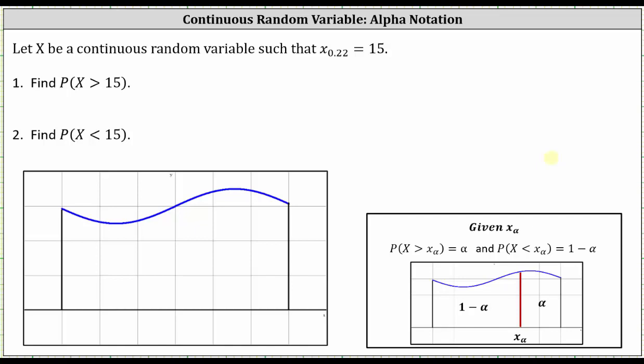then the probability that x is greater than x sub alpha is equal to alpha, and the probability that x is less than x sub alpha equals one minus alpha.